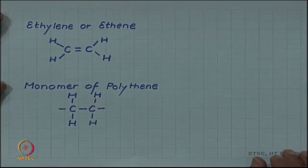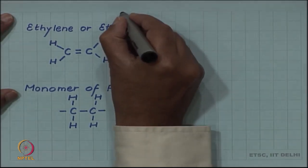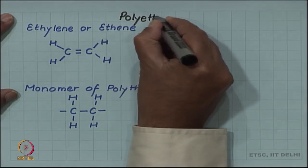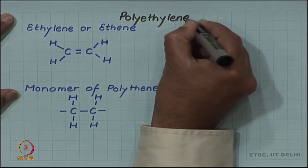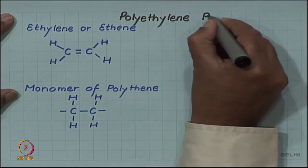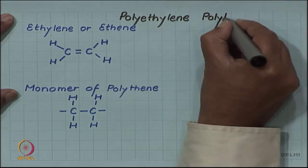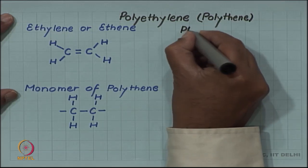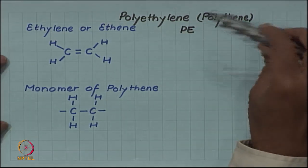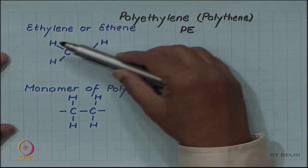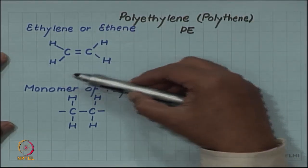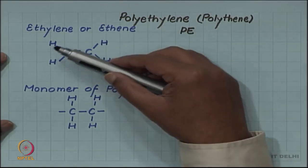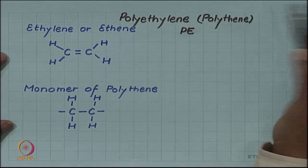Let us look at an example of polyethylene or polythene, abbreviated as PE. This polymer is made of ethylene or ethene gas. In the gas, you have a doubly bonded pair of carbon with two hydrogen attached to each of these carbon.